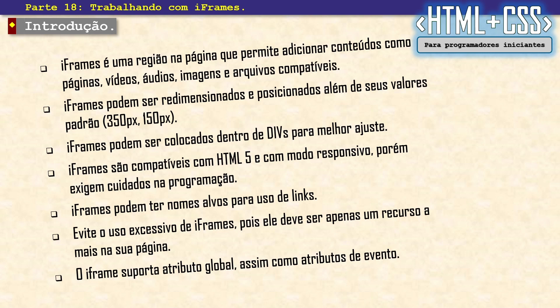O iframe é uma região que você carrega coisas dentro dela, parecido com o frame. Iframes podem ser dimensionados e também posicionados além do valor padrão. O valor padrão do iframe é 350 pixels por 150. O frame você tem que criar um esqueletinho e já definir o tamanho e o layout. O iframe você apenas declara e ele já tem um tamanho padrão que é 350 por 150 pixels.